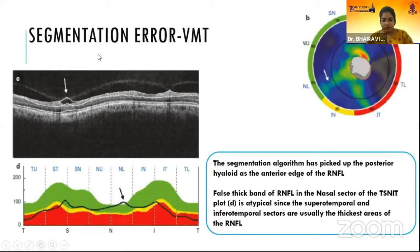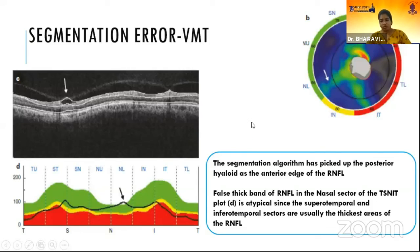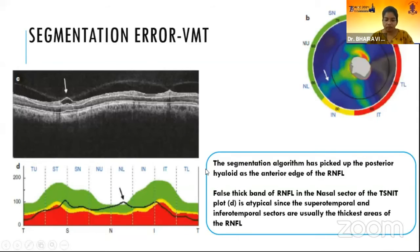Here we can see a segmentation error in the case of vitreomacular traction, where the segmentation algorithm has taken the posterior hyaloid as the anterior edge of the RNFL. In this scan of a glaucoma patient, due to abnormal segmentation, the RNFL profile in the nasal sector appears normal due to segmentation error.